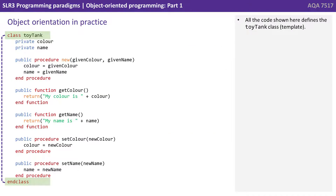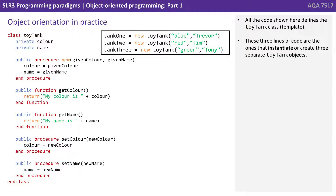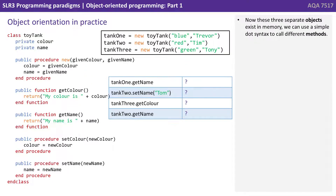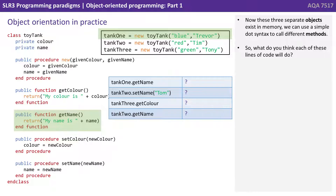All the code shown here defines the toy tank class template. These three lines of code are the ones that instantiate or actually create three separate toy tank objects. We have created three separate instances of the toy tank class, each with its own separate set of private attributes. Tank one is blue and his name is Trevor. Tank two is red — Tim. Tank three is green — Tony. Now these three separate objects exist in memory, and we can use a simple dot syntax to call different methods.